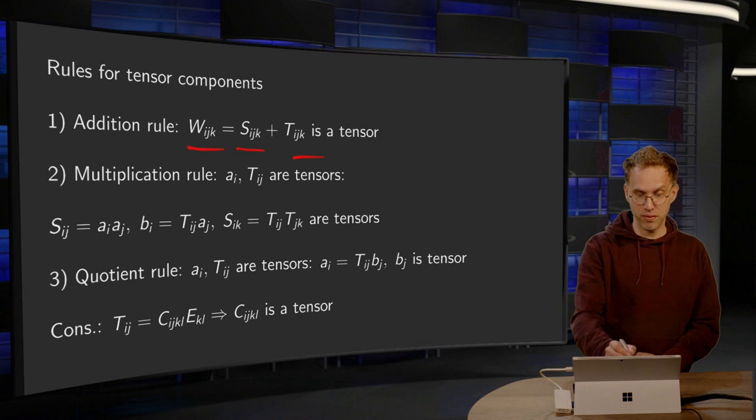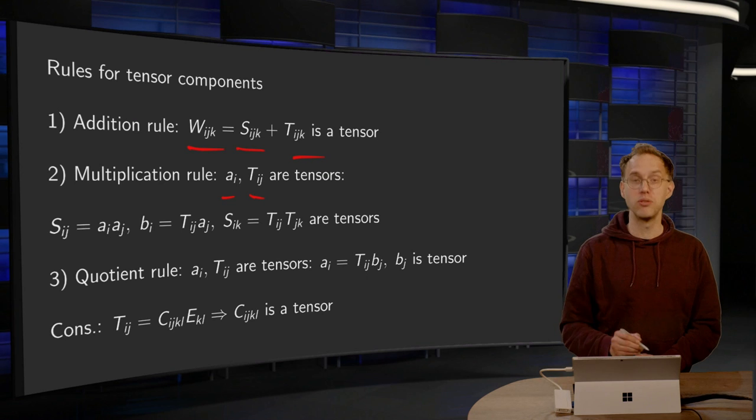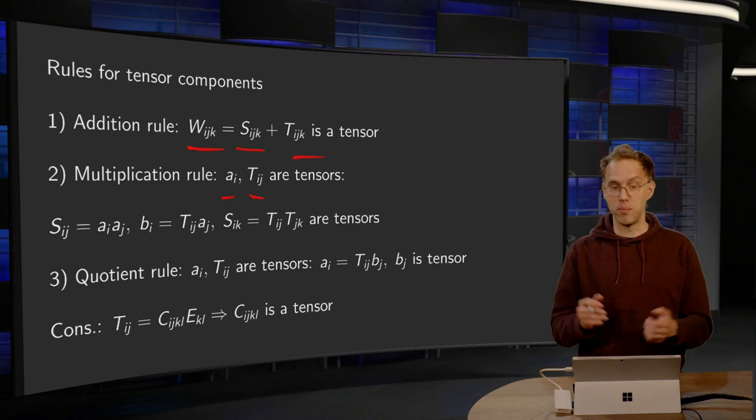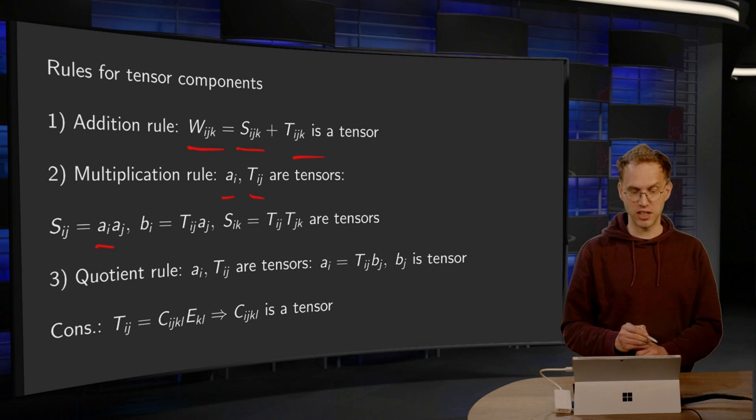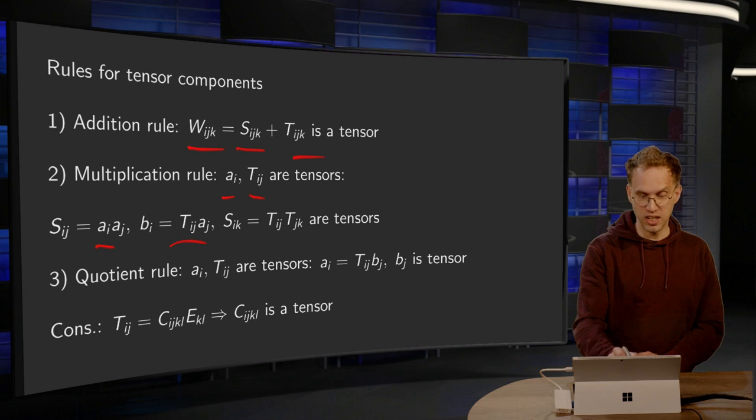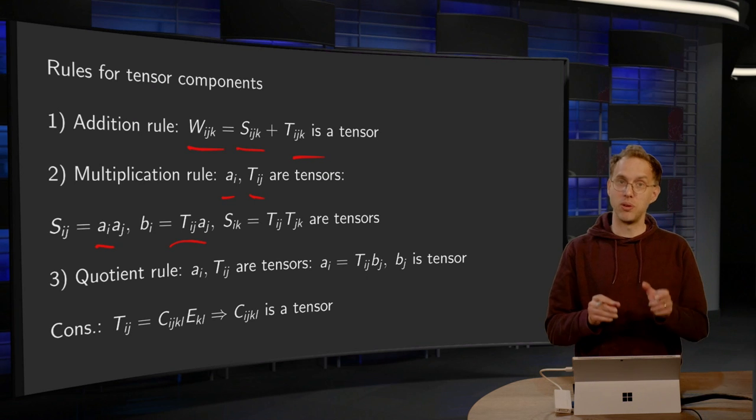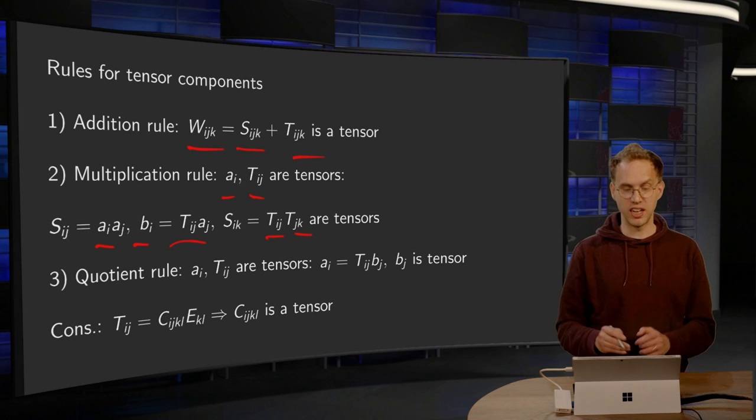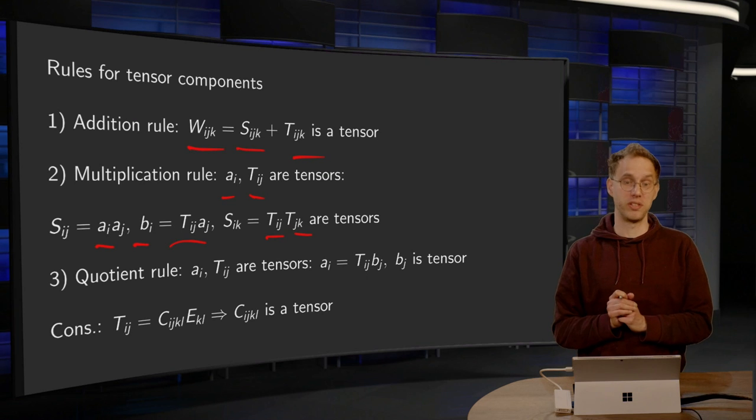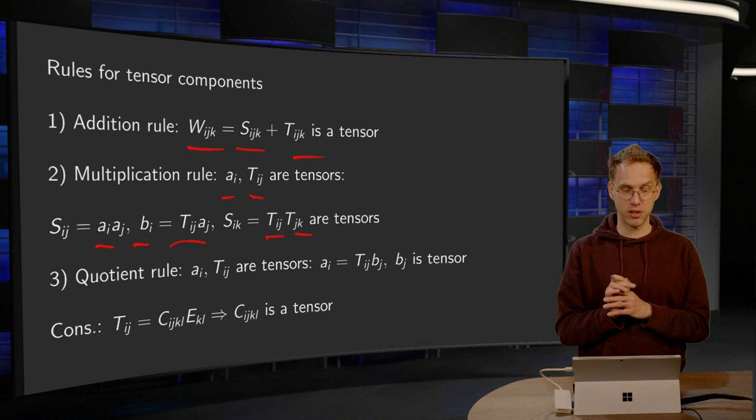And the multiplication rule: if you have some tensors, like this vector, rank 1 tensor, and this rank 2 tensor, then you can form other tensors, like ai aj will be a rank 2 tensor Sij, or you can compute Tij aj, so you're left with 1 index, so you will get a rank 1 tensor, or something like Tij Tjk. All those products are all tensors. We will show you that product rule as well.